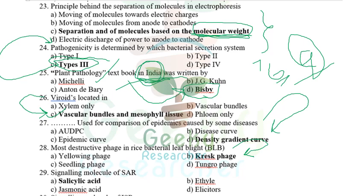In bacterial leaf blight of rice there are three phases: kresek phase (wilt phase), leaf blight phase, and yellow leaf phase. Kresek phase is the most dangerous because infection spreads systemically. The most destructive phase is the kresek phase.